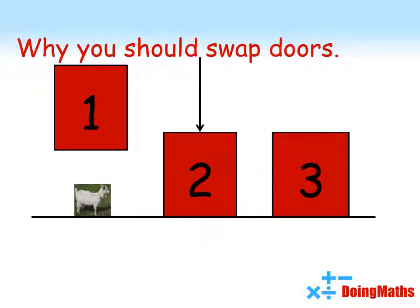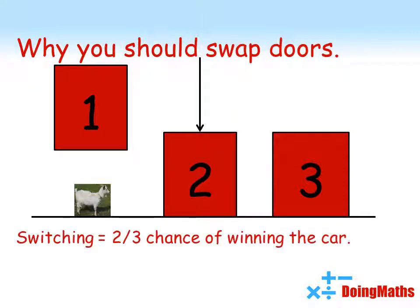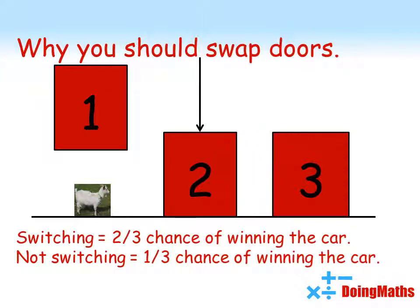The thing to remember here is that even though you have ended up with only two closed doors, the host's choice of which door to open was dependent upon your original choice. So, it is the probabilities of the original three doors from the beginning that are important. So, switching has a two-thirds chance of winning. Not switching has only a one-third chance of winning.